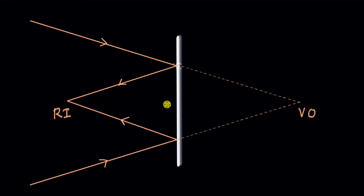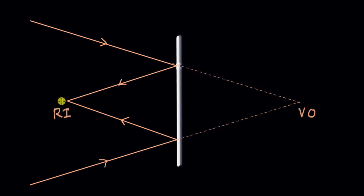Usually with mirrors we always had a real object and got a virtual image, and we can also get that using the principle of reversibility of light. If we reverse the direction of travel of the light rays — if we had a real object here as the source — the light rays would be diverging from that object.